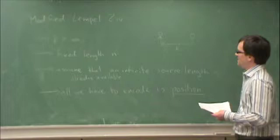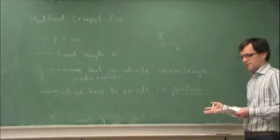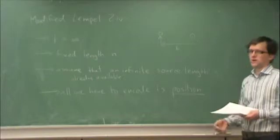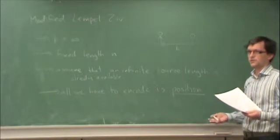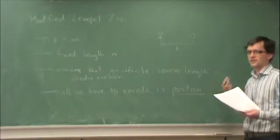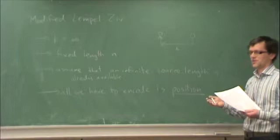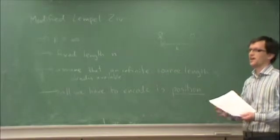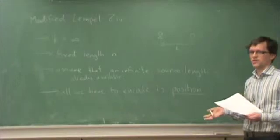If, the nice thing about all of these averaging arguments is that if a very low probability event occurs, then you can handle it in an arbitrary way, almost, and it doesn't affect the average. Because basically you can, if something is sufficiently low probability, you can handle it however you like, and the average is not really affected.